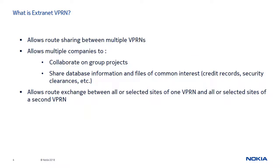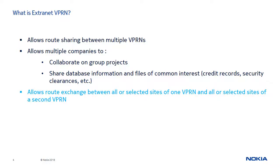Extranet VPRN is a topology that allows route sharing between multiple VPRNs. This topology fulfills the requirements of companies collaborating on projects or sharing files that are of common interest. This is achieved by allowing each VPRN to share some or all of its routes to other VPRNs.